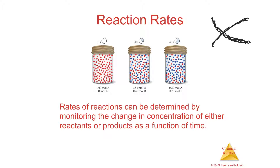A is going down over time while B is going up at the same rate. So at zero seconds you have one mole of A and zero B. At 20 seconds it's about half-half. At 40 seconds, B is at 0.7 and A is down to 0.3.